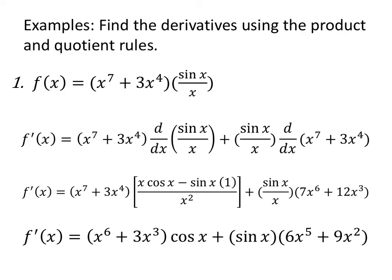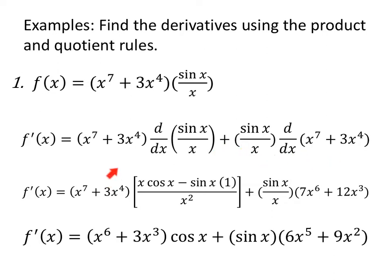Example 1. We're going to find the derivative of f(x) equals x to the 7th plus 3x to the 4th, all multiplied by a quotient. So within an overall product, we have a quotient we have to take care of. It means when we find the derivative of f, we're going to use the product rule. But within the product rule, we need a quotient rule. So it'll be first times derivative of the second, plus second times the derivative of the first. That's our structure — that's telling us what we need to do.